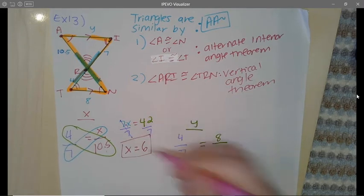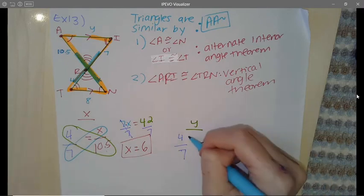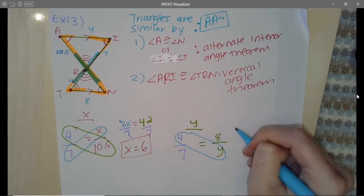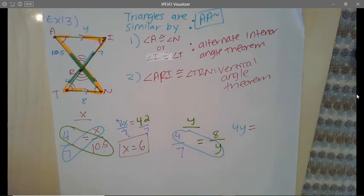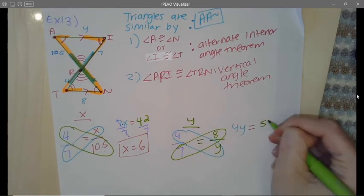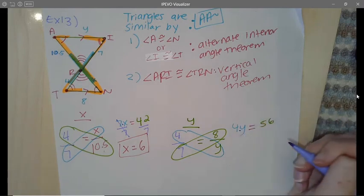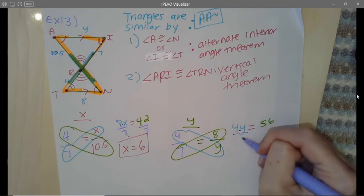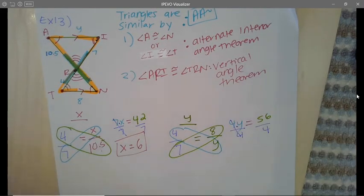Same thing for Y, we just got to cross multiply. So 4 times Y will give me 4Y, and that will equal 7 times 8, which will give me 56. Don't forget, 4 and Y are secretly multiplying, so that tells me I'm going to divide both sides by 4.